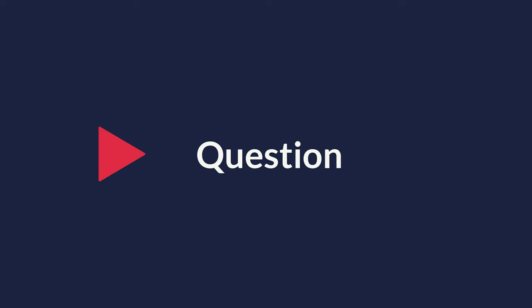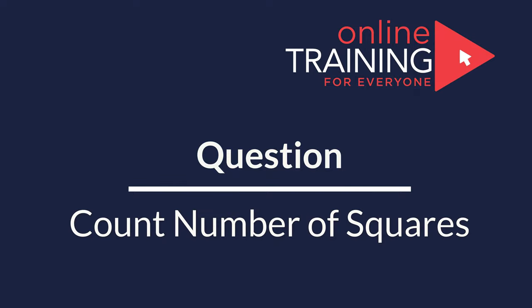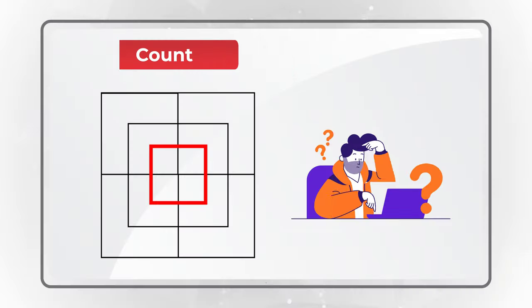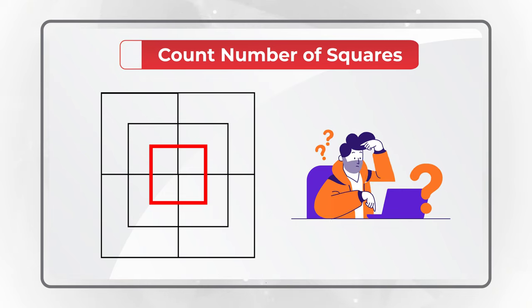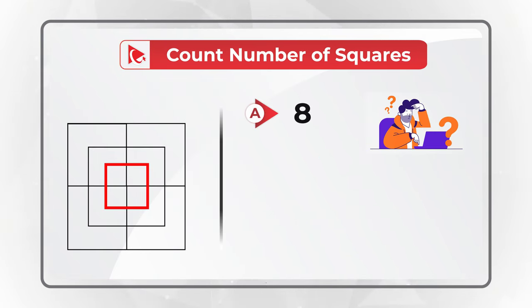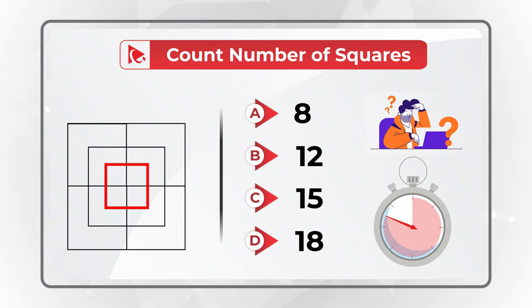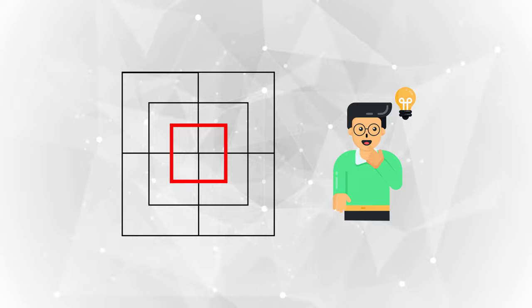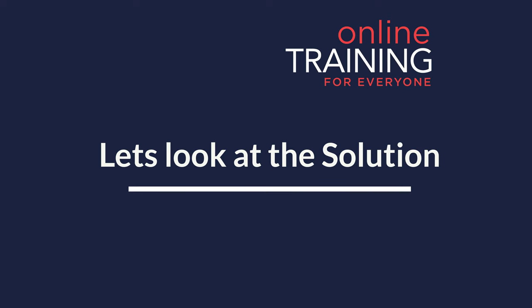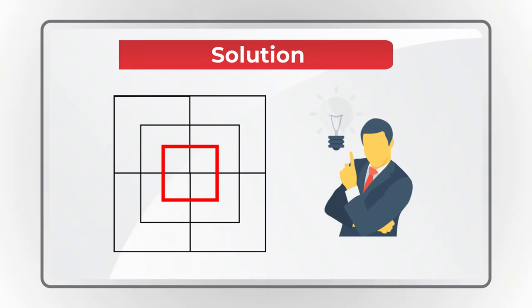Here's one of my favorite questions where you need to count the number of squares presented in the shape. You have four different choices: A. 8, B. 12, C. 15, and D. 18 squares. Take a close look at the picture. Nobody will give you a tip during the real test, but here's a hint: look at the squares inside the squares. Believe it or not, I counted 15 squares in this picture.